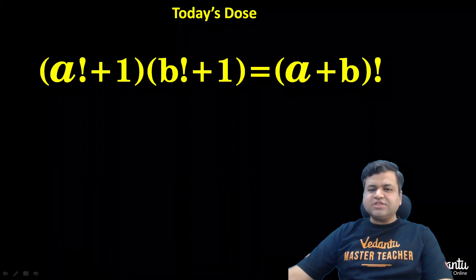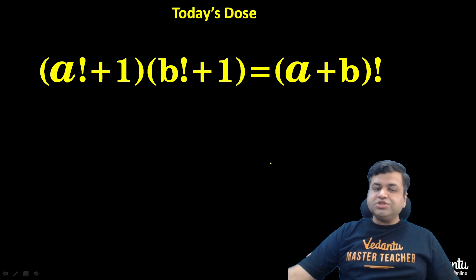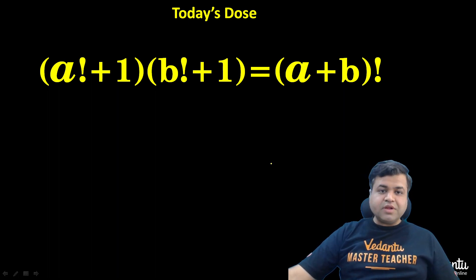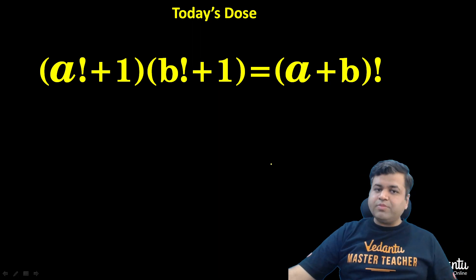Hello dear students. So today's question is very interesting. There is a logical question on factorials. The question states that a factorial plus 1 times b factorial plus 1 equals a plus b whole factorial. Given this equation, we need to find the values of a and b. Find all the possible values of ordered pairs a comma b.